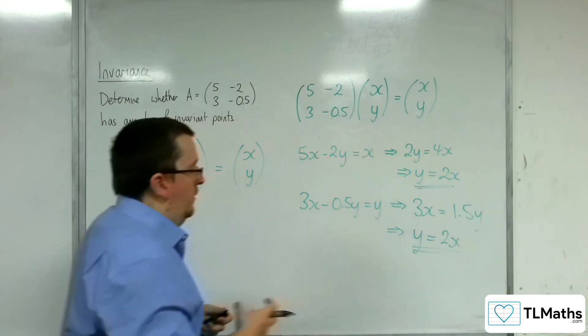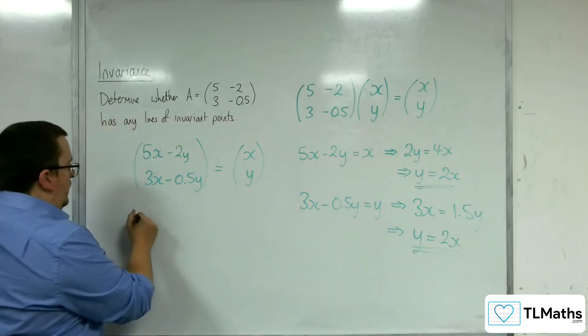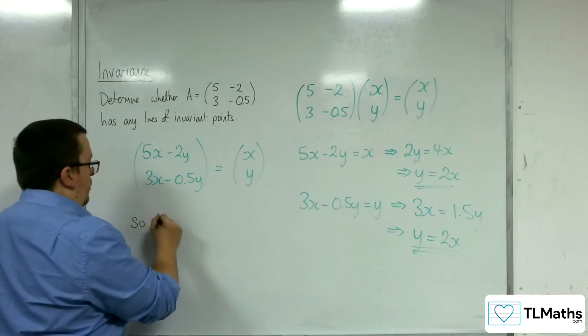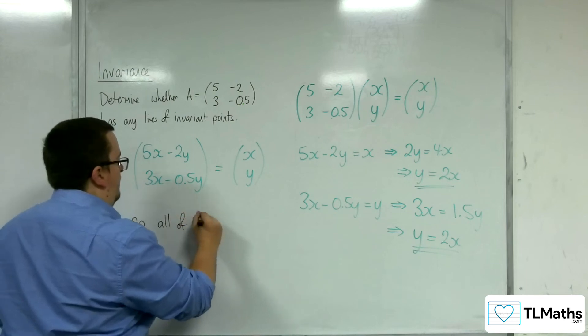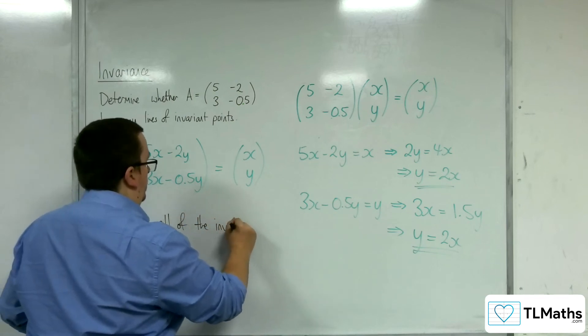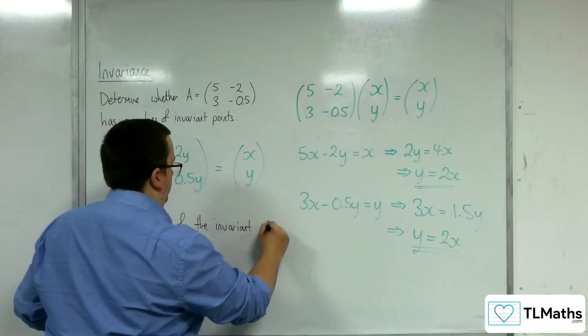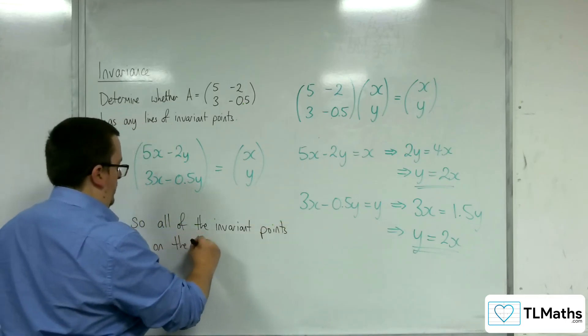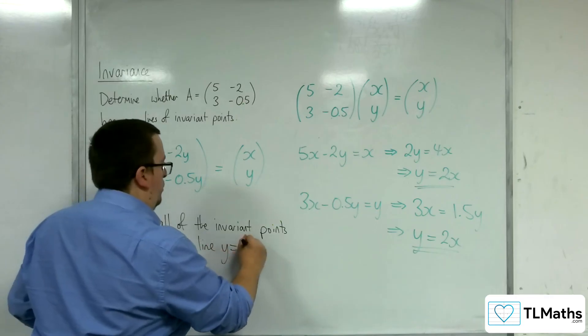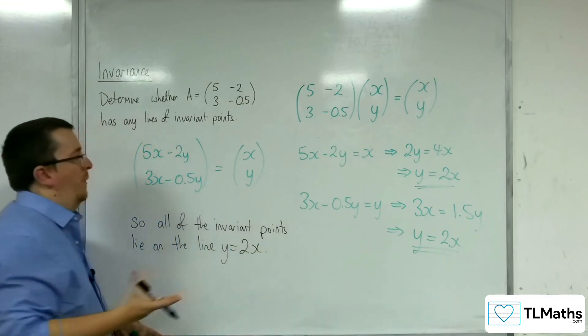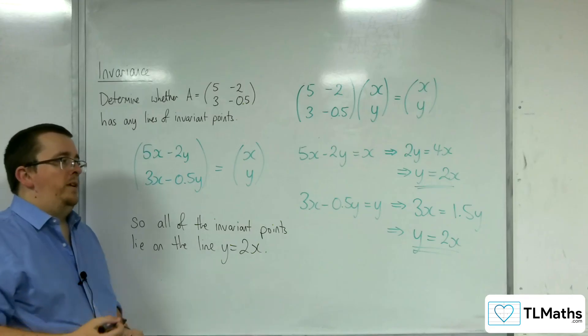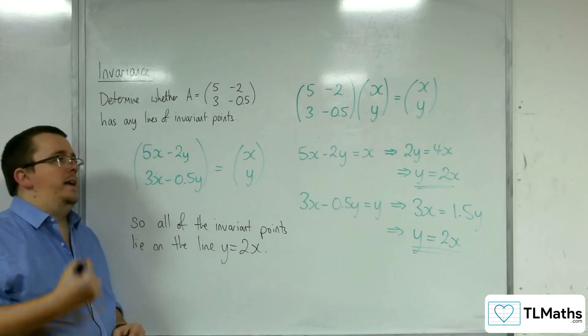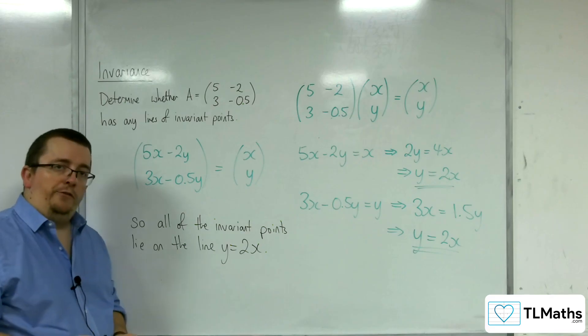So there was a line. All of the invariant points lie on the line y equals 2x. What that's saying is that if you had a point on y equals 2x, then it would be mapped to itself.